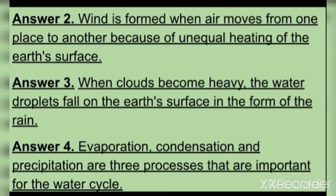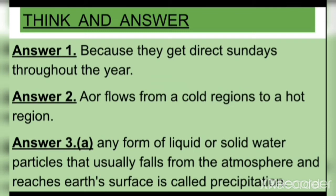Think and Answer. Answer 1: Because they get direct sunrays throughout the year. Answer 2: Air flows from cold regions to a hot region. Answer 3A: Any form of liquid or solid water particles that usually falls from the atmosphere and reaches Earth's surface is called precipitation.